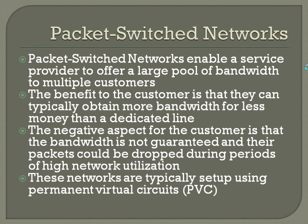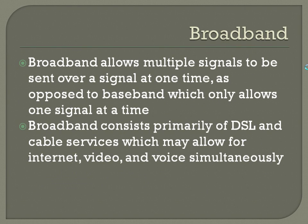So if you're trying to run VoIP, for instance, you're going to need 64K of bandwidth if it's unencoded, and you don't have any guarantee that you're going to get that. So you can't guarantee that calls are going to work at any given time. Broadband allows multiple signals to be sent over a single medium at one time, as opposed to baseband, which only allows one signal at a time.